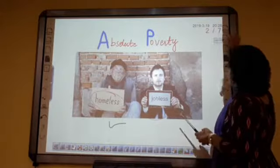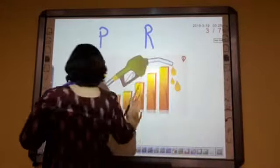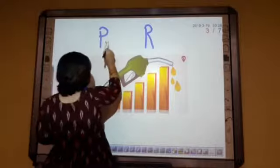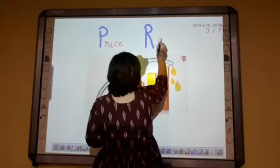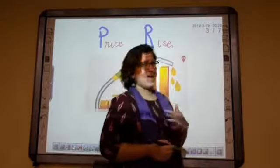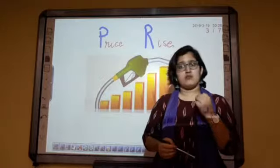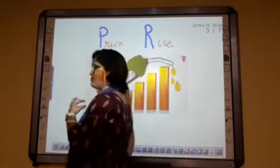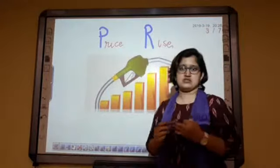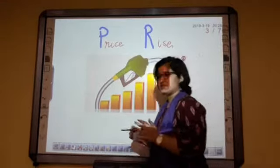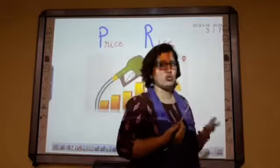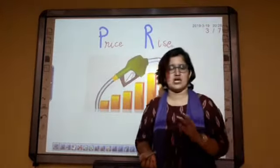Moving forward to the reasons of poverty. The first reason is price rise — that is, an increase in the price and cost of basic necessity products, for example salt, fruits, vegetables, etc. This is not about luxurious products, because those are obviously going to be purchased by rich people only, so rich people will not be much affected by price rise.